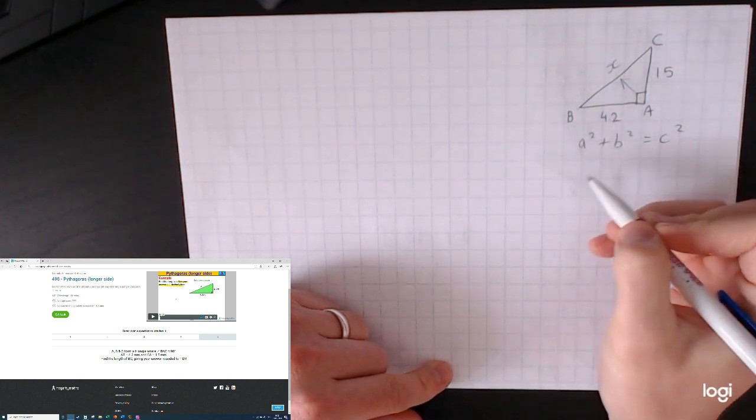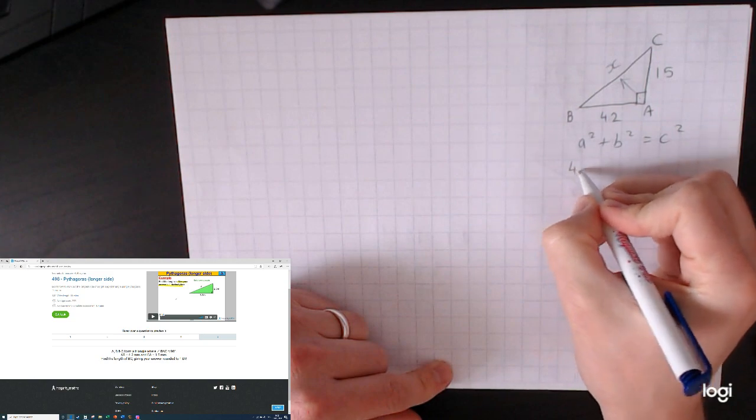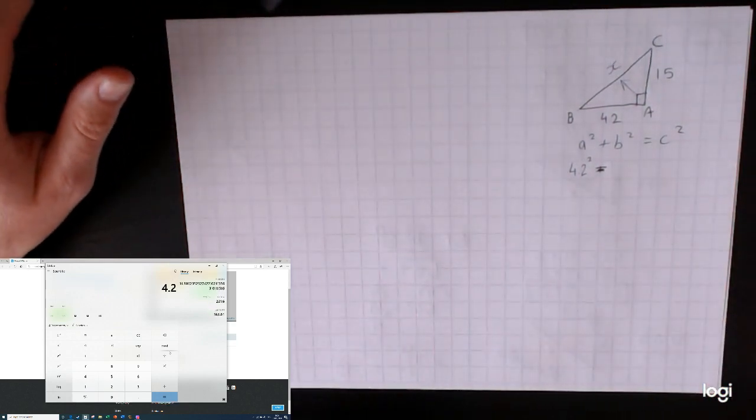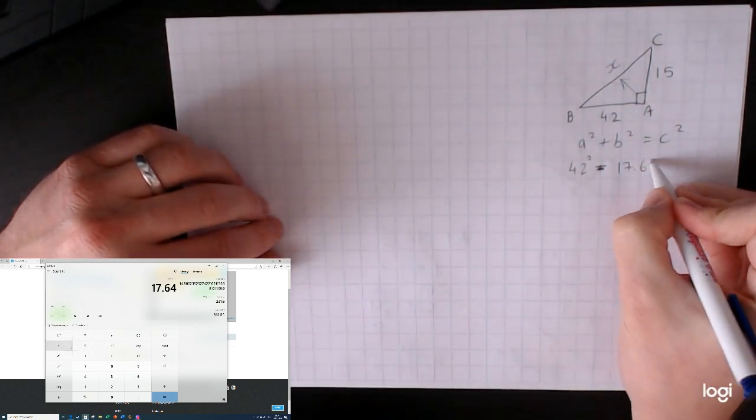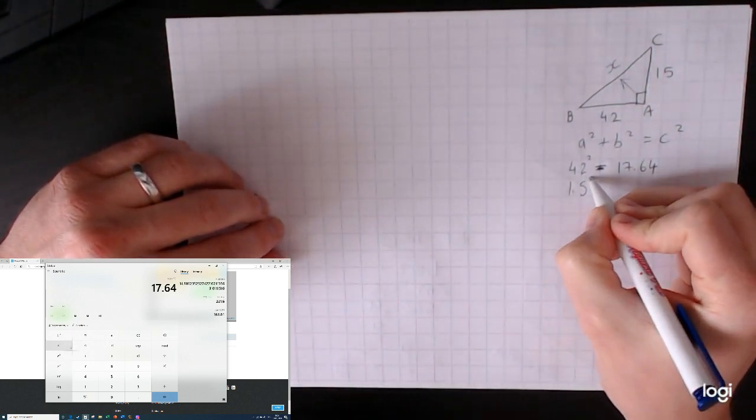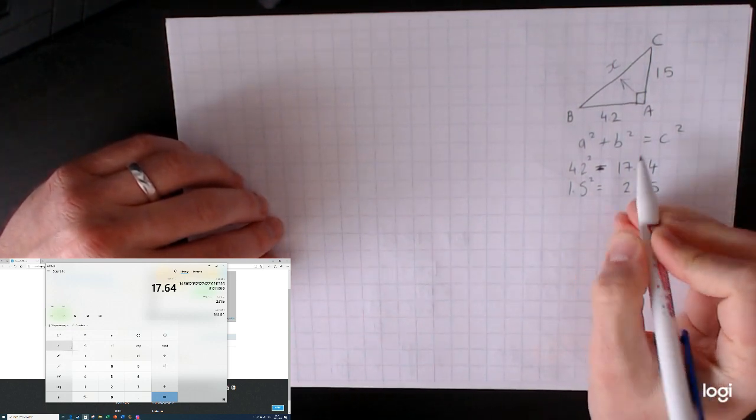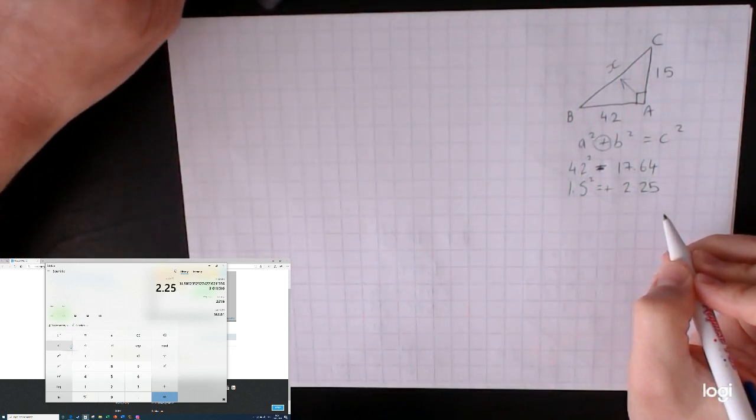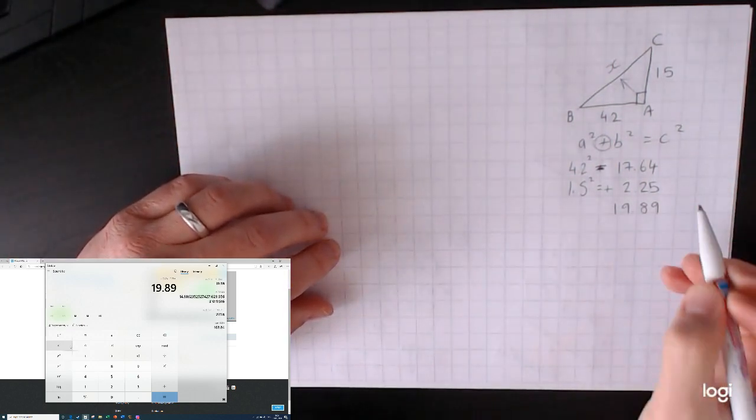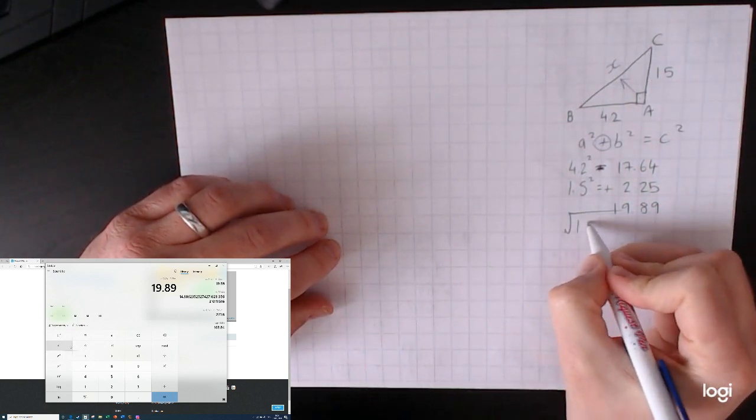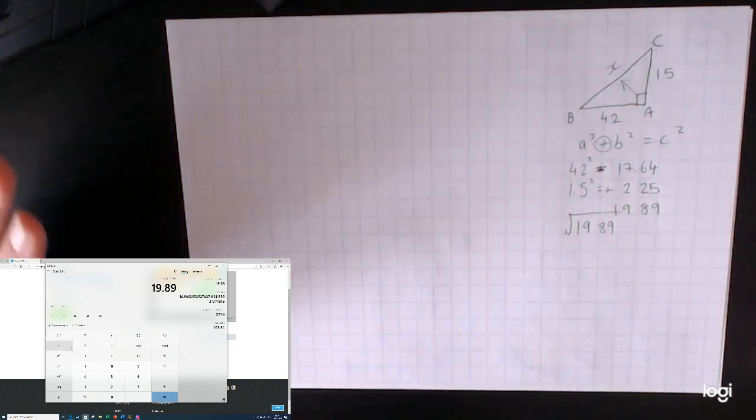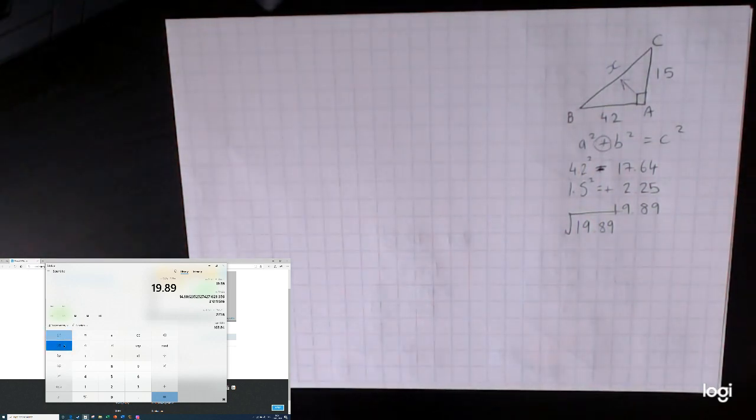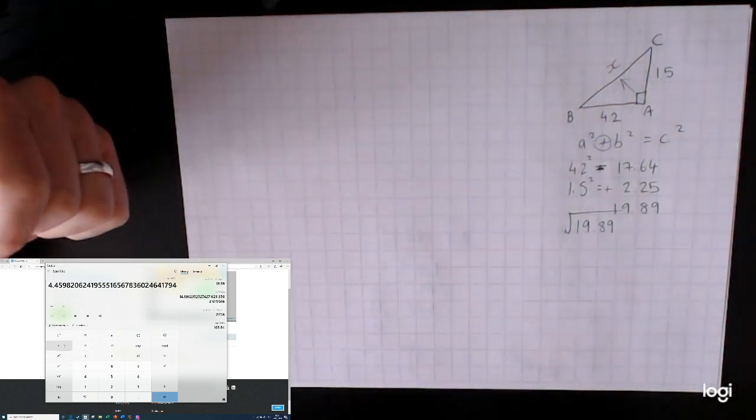So substitute in. We're going to square the two small sides: 4.2 squared plus 1.5 squared equals - let's work that out individually first. 4.2 squared is 17.64, 1.5 squared is 2.25. Since we've said that it's after a long side, we're going to add them together which is 19.89. Once again, don't just think you've finished at this point - square root your answer.